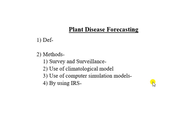Survey and surveillance: In this method, repeated surveys are made at a fortnightly interval to assess the infection of the pathogen or particular disease, by monitoring the development of pathogens through stable warning systems so that messages are spread among the farmers.